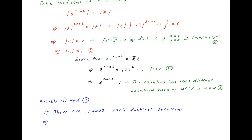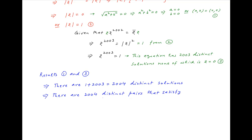Or in other words, there are 2004 distinct pairs that satisfy the given equation. And this is the required result.